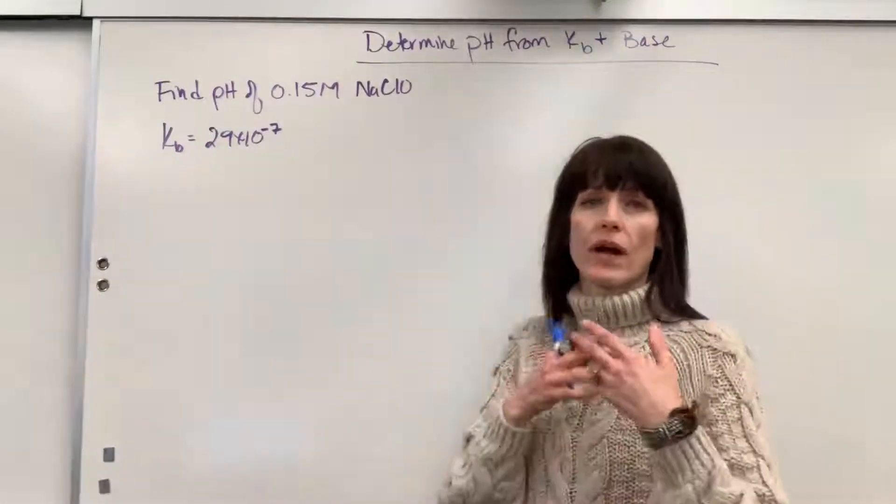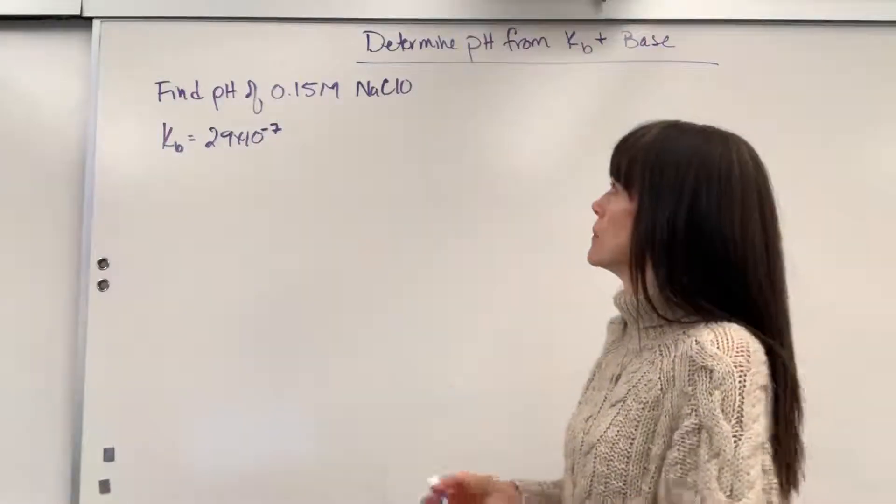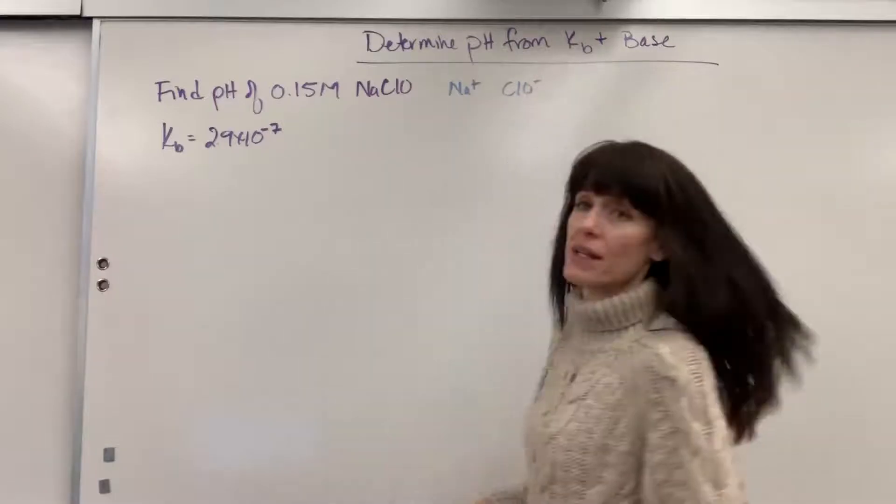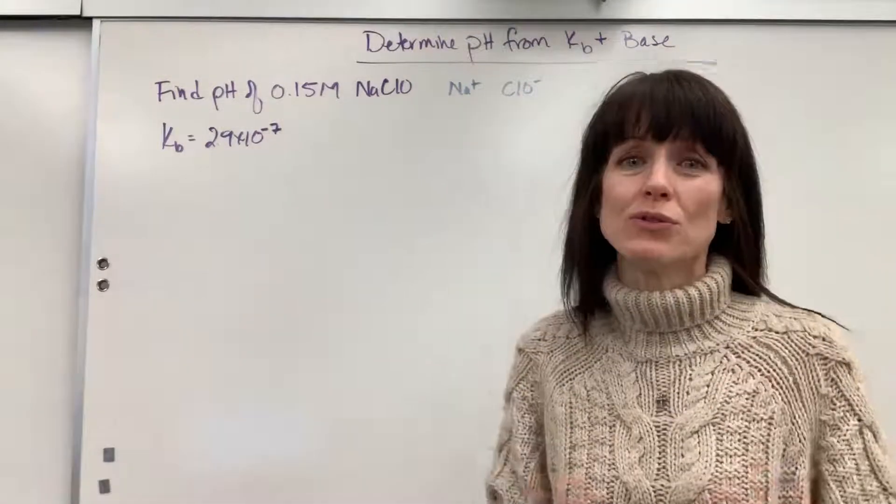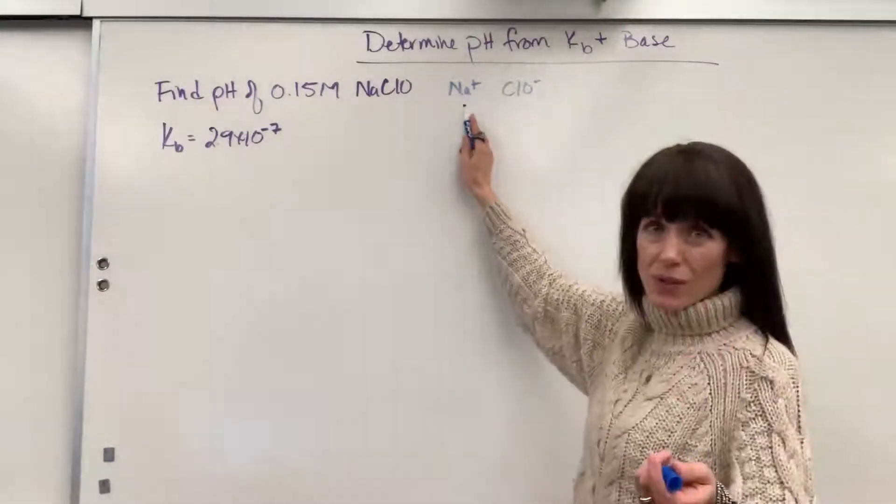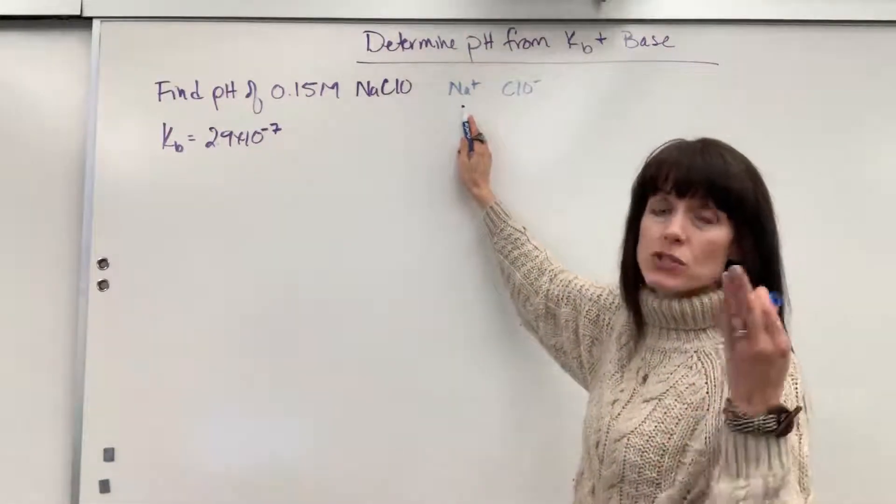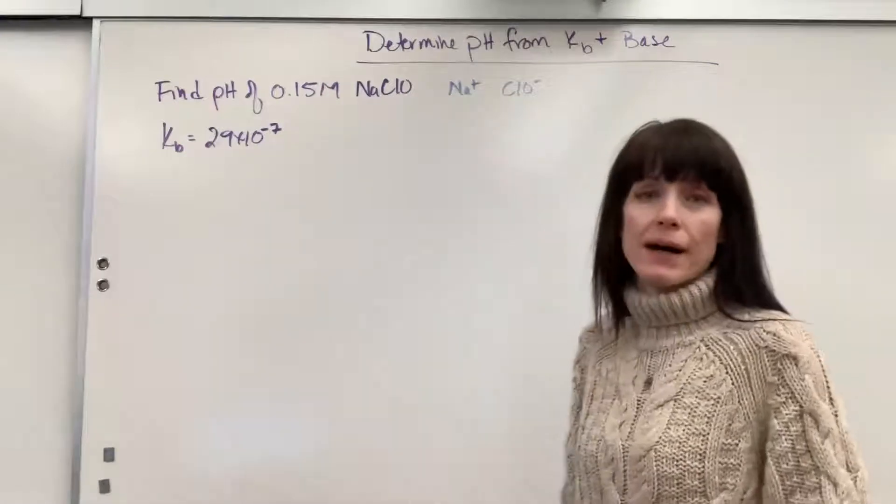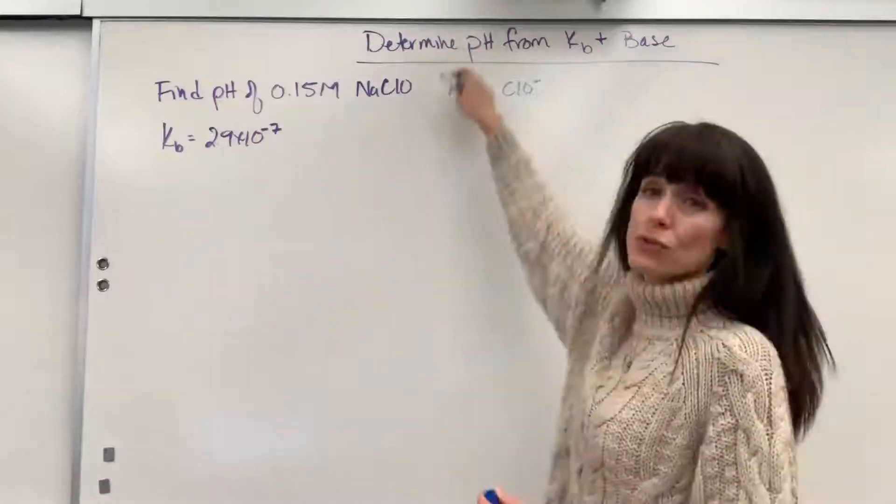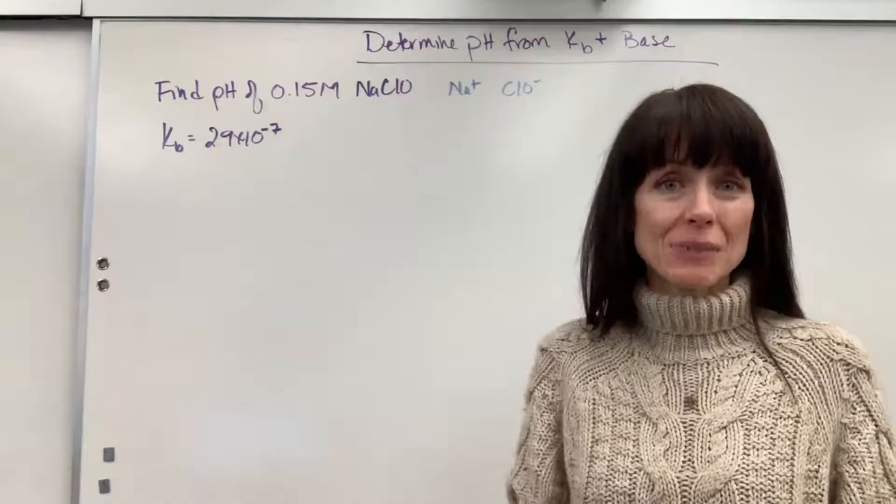This is a salt. We know every salt with sodium is going to be 100% soluble, 100% dissociate. So this is going to break into Na+ and ClO-. That Na+ is a neutral ion. It will not impact pH. Because it is associated with a strong base, sodium hydroxide is neutral. It does a big fat nothing to the pH. You ignore that. It's going to be a spectator ion.